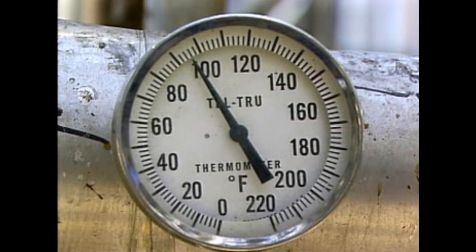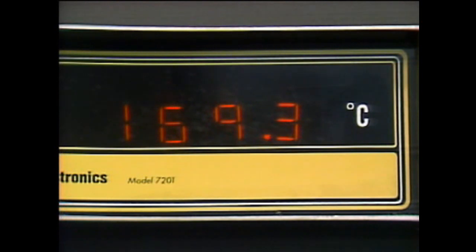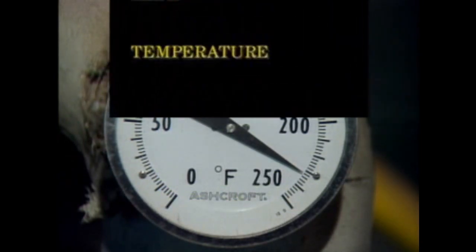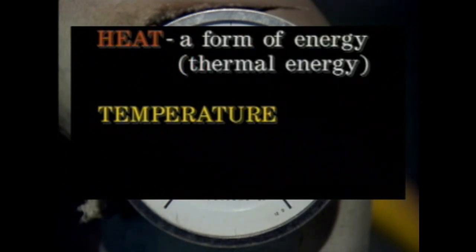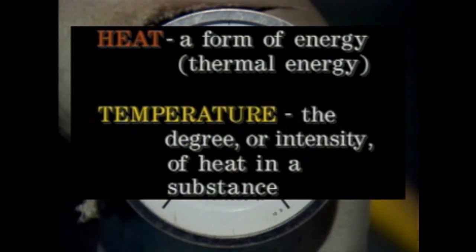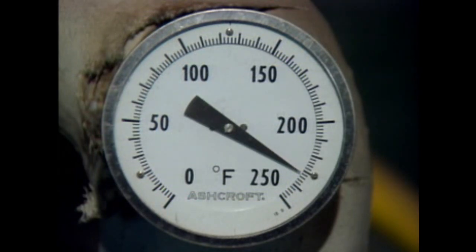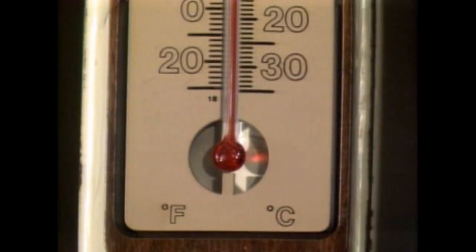Temperature is a key process variable and it needs to be measured accurately to help prevent undesirable conditions from occurring in a process. To understand temperature measurement, it helps to have an understanding of what heat and temperature are. Heat is a form of energy, sometimes referred to as thermal energy. Temperature can be thought of as the degree or intensity of heat in a substance. Temperature measuring devices normally have temperature scales, and two commonly used are the Fahrenheit scale and the Celsius scale.